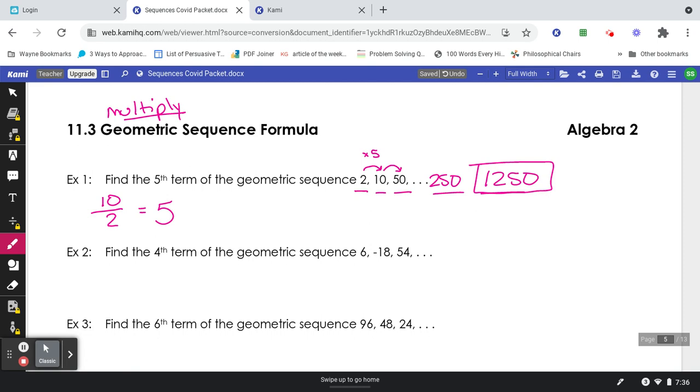Next one. Find the fourth term of the geometric sequence 6, negative 18, 54. I will do negative 18 divided by 6 to get negative 3. That's what I'm multiplying by. So I have 1, 2, 3. I only need one more term here. I'll multiply 54 by negative 3 and get negative 162.